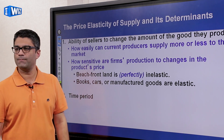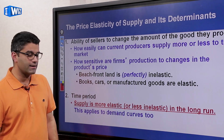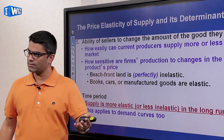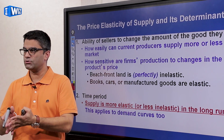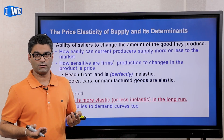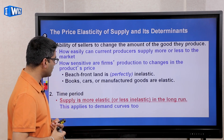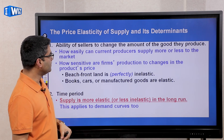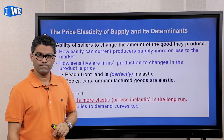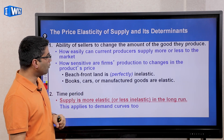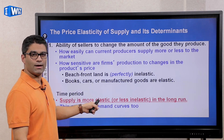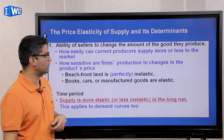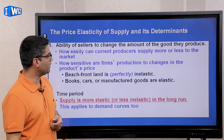The other factor is time period — this is similar to what we talked about on the demand side. If producers have more time to adjust, the supply will be more elastic. If they have very short time to adjust, the supply is going to be more inelastic. Both demand and supply are more elastic in the long run and more inelastic in the short run.